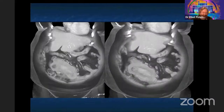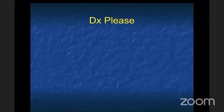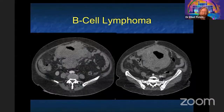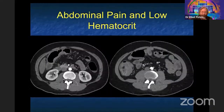Another patient with abdominal pain — similar but different. Answers: GIST and lymphoma. This was B-cell lymphoma — it's much bulkier. The bulkiness is one of the helpful distinguishing features. You often see nodes with lymphoma, but not always. Small bowel lymphoma — very good.